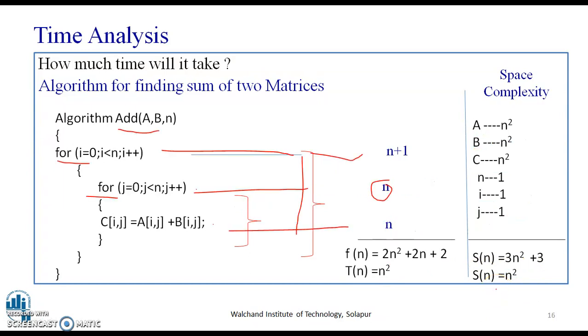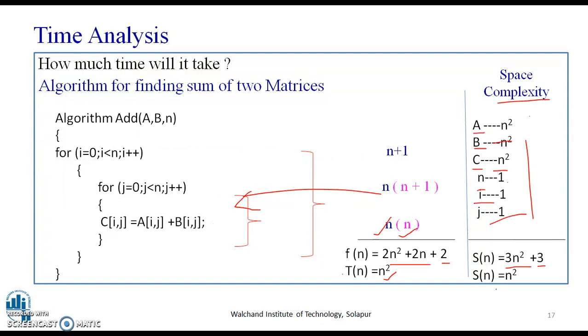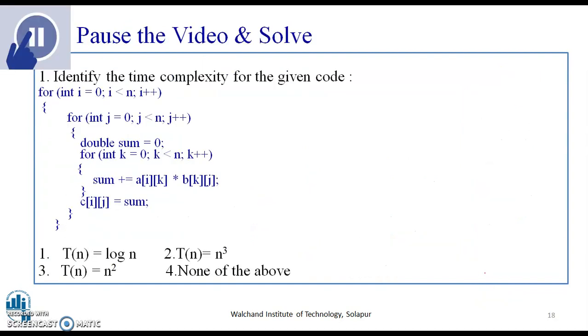From these previous examples, we can trace that when we have nested for loops, the execution frequency goes on increasing. For finding the sum of two matrices, the time complexity T of N is equal to N square. Also, the space complexity S of N is equal to N square. Pause the video for some time and solve the following code for finding the time complexity.